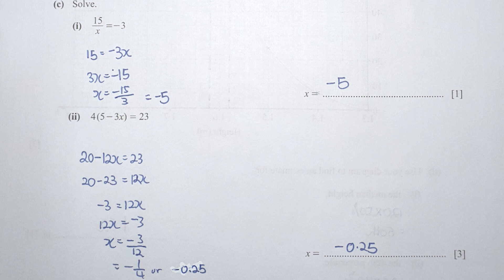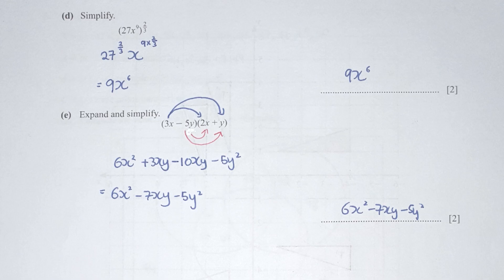For section 2, multiplying the 4 into the brackets gives 20 minus 12X equals 23. After rearrangement, X equals negative 1 over 4, which is negative 0.25. For part D, multiplying the 2 over 3 power into the bracket gives 27 to the power of 2 over 3 and X to the power of 9 times 2 over 3. After calculation, you get 9X to the power of 6.